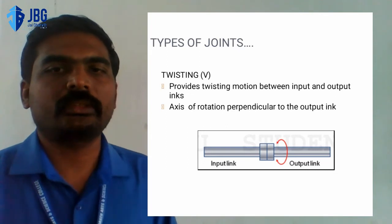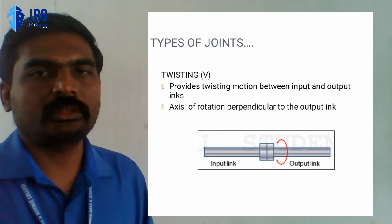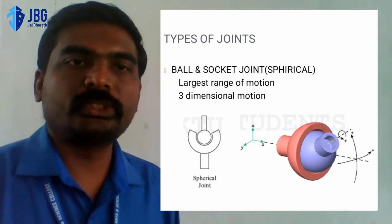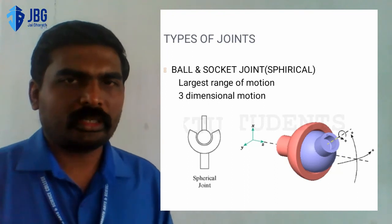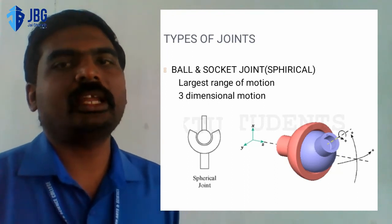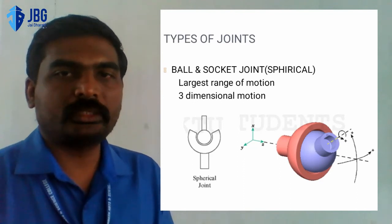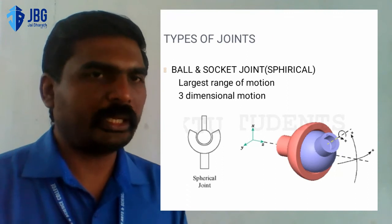The third important joint is the ball and socket joint. It is also known as a spherical joint, or a three-dimensional joint. Not only three-dimensional motions but a larger range of motions can occur. For example, if you are using a joystick, different angles of rotation can be obtained, like while playing video games. In the figure for a ball and socket joint, you can see the x-axis, y-axis, and z-axis representing the three-dimensional motions. Other angular motions can also occur beyond these three dimensions.